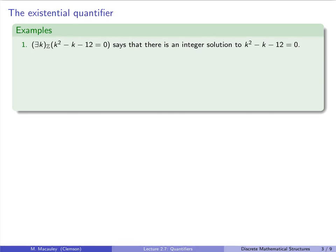Let's do some examples. This first one reads: there exists a K over the integers — that boldface Z — such that K squared minus K minus 12 equals 0. This is why we often don't write 'is true' — if we have an equality, we just state the equality. This statement says there is an integer solution to the equation K squared minus K minus 12 equals 0.